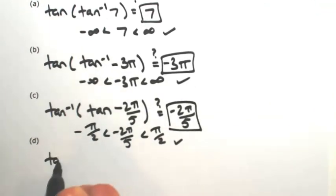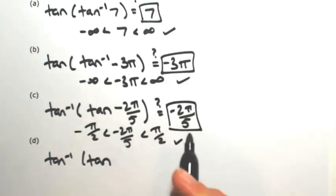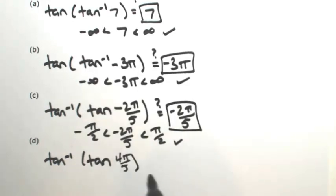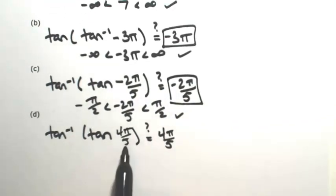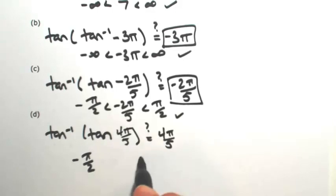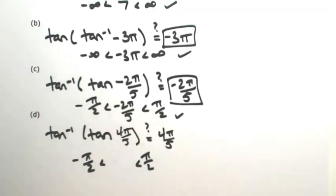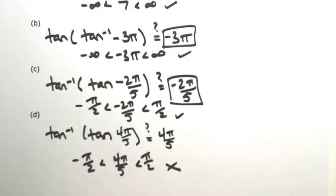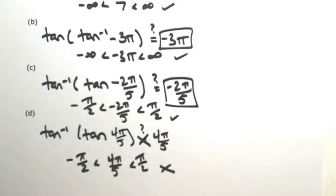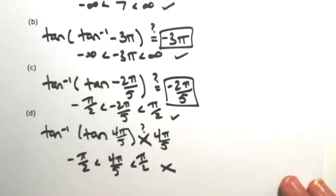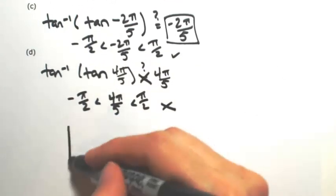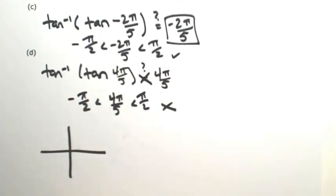One more, a little bit trickier: the inverse tangent of tangent of 4 pi over 5. Maybe this equals 4 pi over 5 — we'll find out in a second. The angle restriction on tangent is negative pi over 2 to pi over 2. Since 4 pi over 5 is not less than pi over 2, this is not 4 pi over 5. However, tangent of 4 pi over 5 is defined, so we're going to do a clever maneuver and move the angle into the proper quadrant.